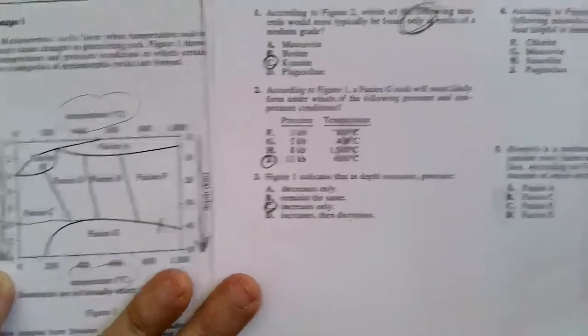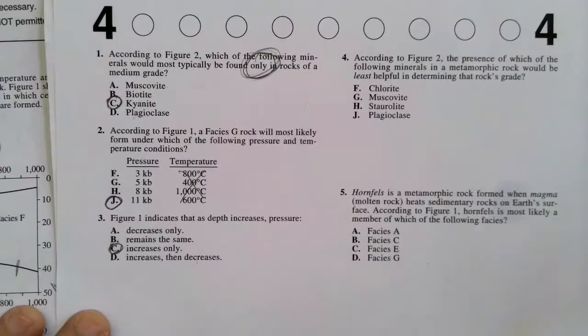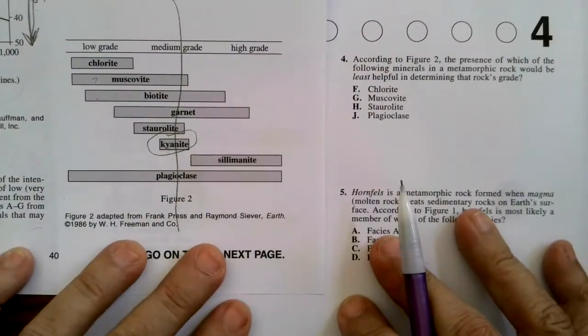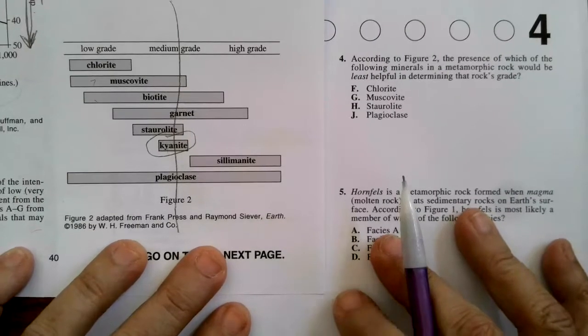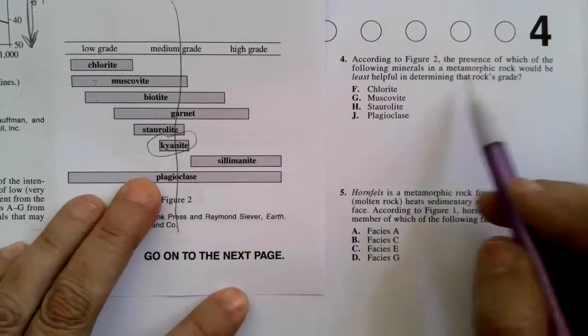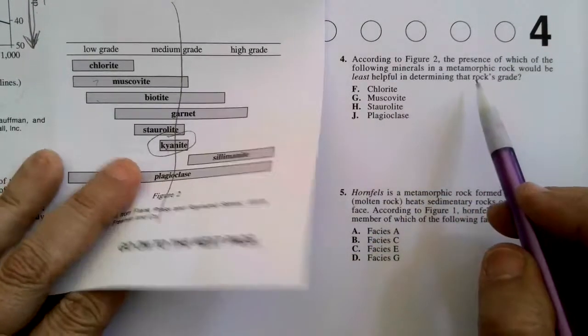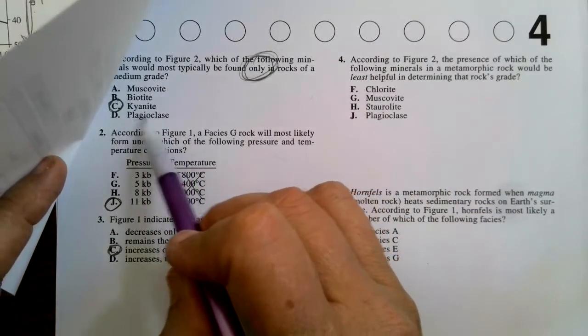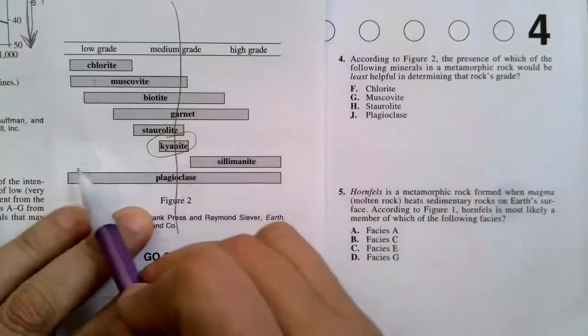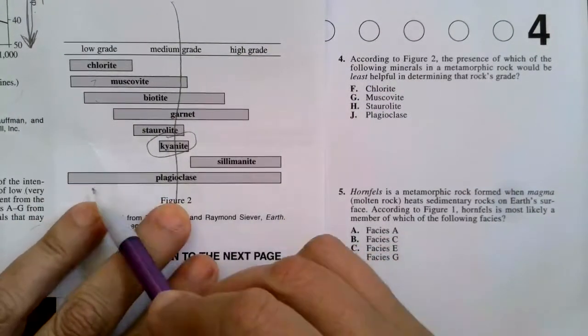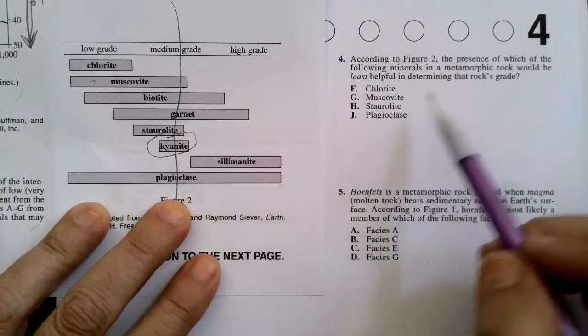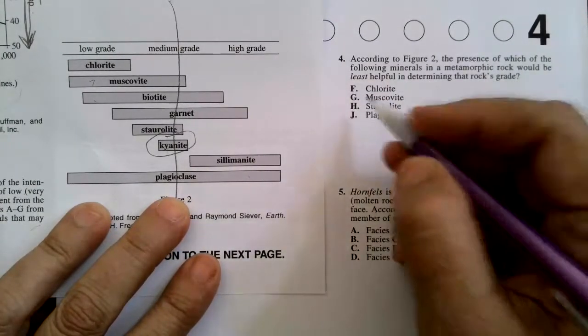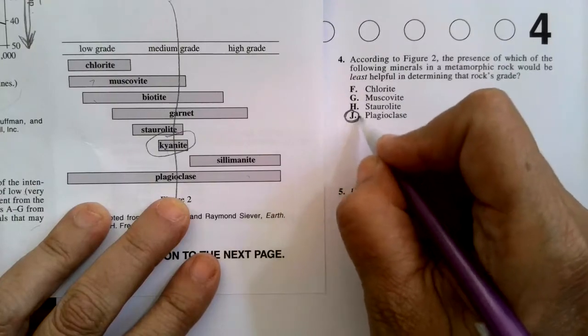Number four. According to figure two, here's figure two, the presence of which of the following minerals in a metamorphic rock would be least helpful in determining that rock's grade? And now I remember over here, this plagioclase was in every single grade. So if I saw plagioclase was there, it could be anything. So is plagioclase there? Yes. That's going to be the least helpful.